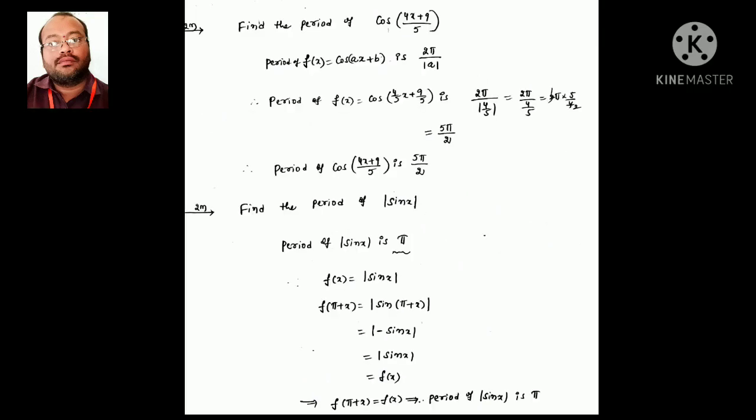Next: for a cos function, the period of cos(ax + b) is 2π/a. Here a = 4/5, so replacing that value gives the period as 5π/2.